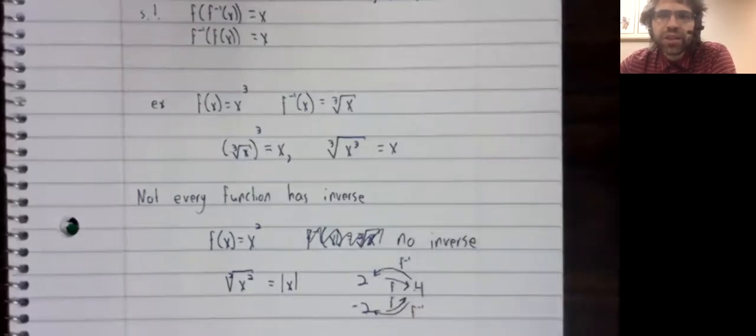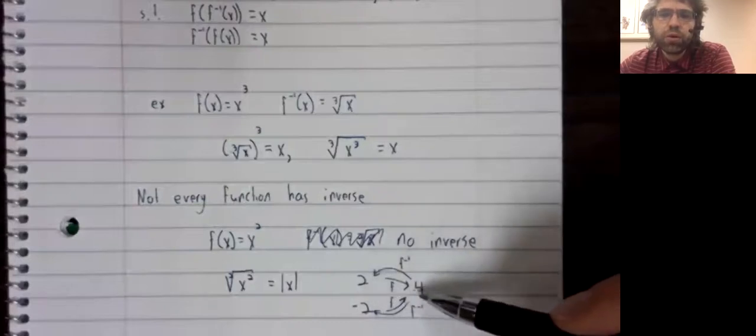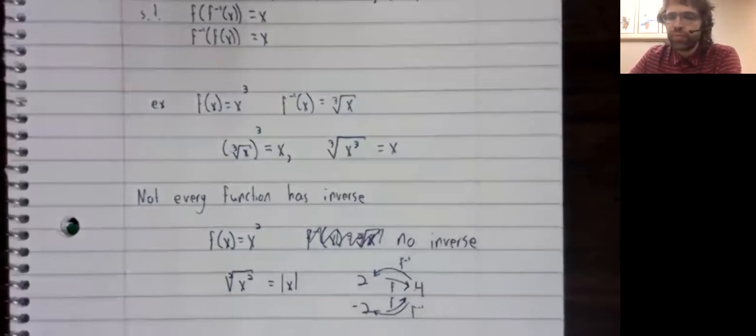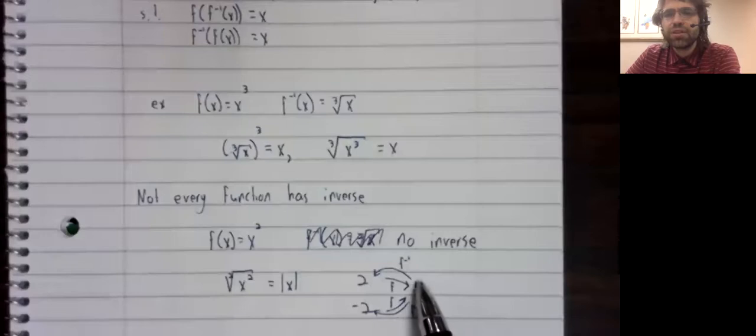We can't have a function, though, that takes four to two different numbers. The requirement of a function is that it takes inputs and uniquely maps them to outputs. So this function has no inverse.